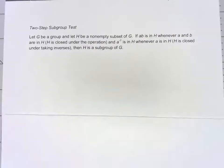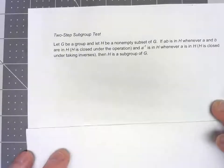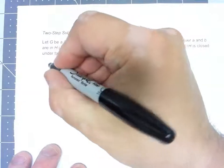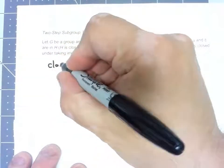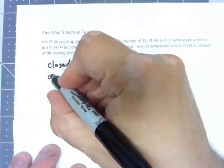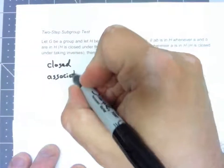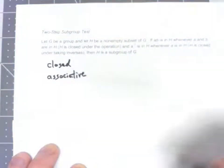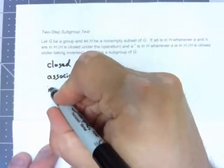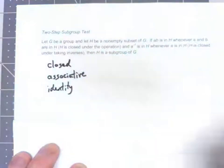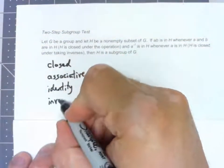So, we know there are four properties that we look for to check whether something's a group. We have to check that it's closed under the operation. We have to check that the operation is associative. We have to check that an identity exists. And we have to check that every element has an inverse.